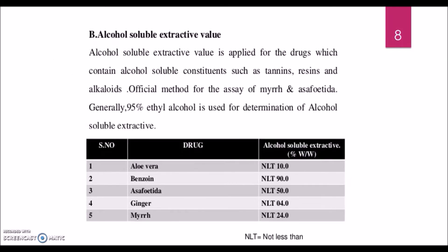Alcohol is the next preferable solvent after water. Besides the polar compounds already mentioned, it can also extract resins and alkaloids. The alcohol-soluble extractive value is an official method for asafoetida and shea mead, which are major resin-containing crude drugs. 95% ethyl alcohol is used as the solvent.